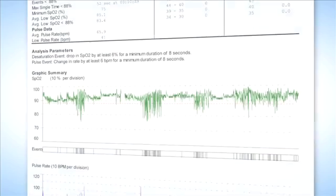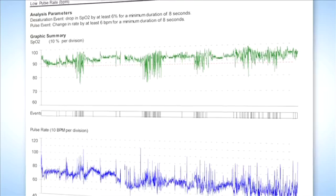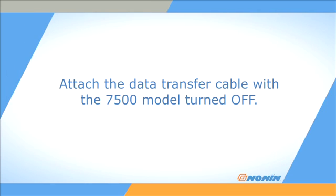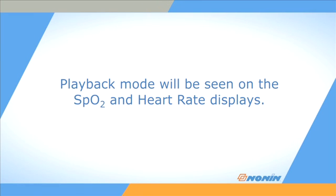You can download the measurement data in the oximeter to Nonin's Envision software for storage and analysis. To download the 70-hour memory from the oximeter, attach the appropriate cable or data collection drive from Nonin Medical with the 7500 model turned off. Press the plus button and the on-off button, then release the plus button. Playback mode will be seen on the SpO2 and heart rate displays until the data transfer is complete, after which the oximeter will return to its normal function screens.